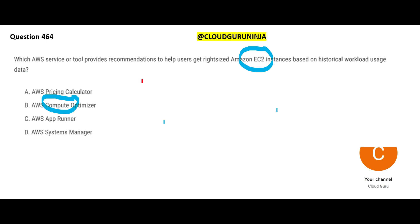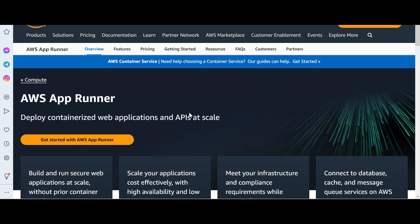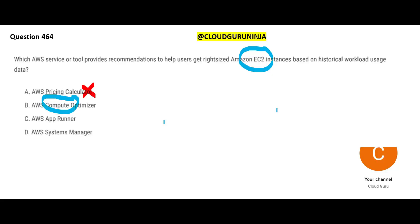The AWS Pricing Calculator is like calculating apartment cost at a per-square-foot rate — it helps estimate costs. That's not what this question needs. App Runner is for containerized web applications — you pack it once and deploy it many times on AWS, Alibaba Cloud, IBM Cloud, Google Cloud, anywhere. But this question has no such containerization requirement, so App Runner is not the answer.